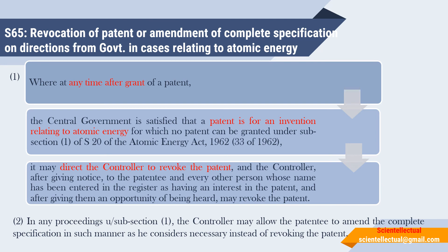In any proceedings under Subsection 1, the Controller may allow the patentee to amend the complete specification in such manner as he considers necessary, instead of revoking the patent. That is, if after grant the Central Government finds a patent related to atomic energy and directs the Controller to revoke it, the Controller may give a chance to the patentee to amend or change the complete specification in such manner as he considers fit, instead of revoking it, so that the patent may be retained.